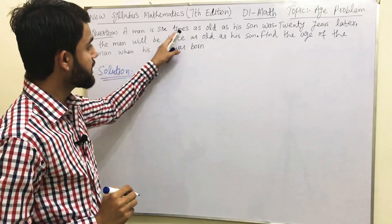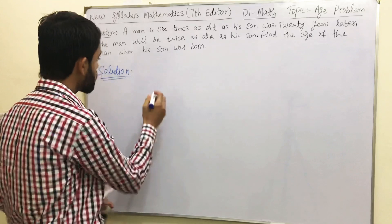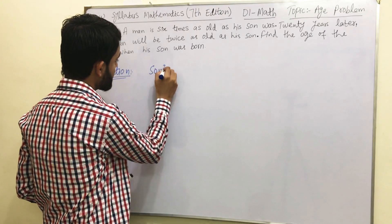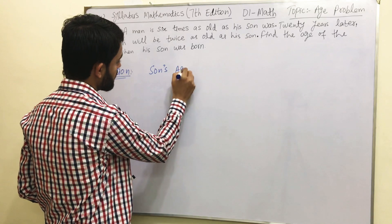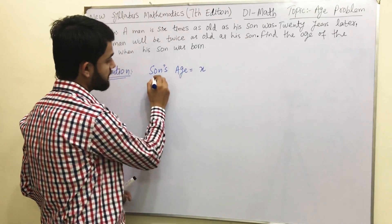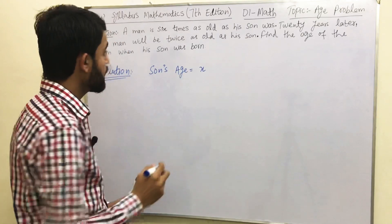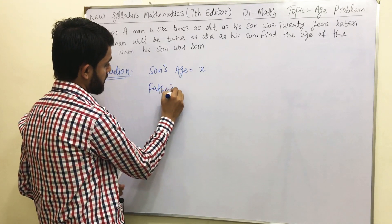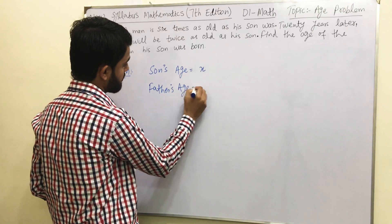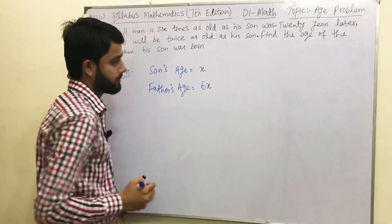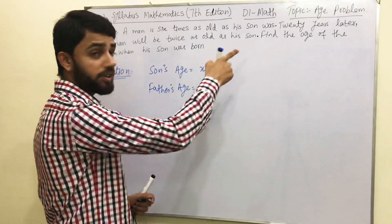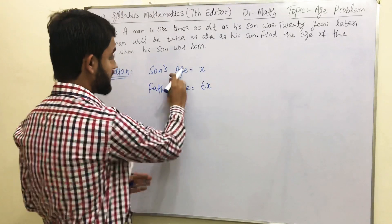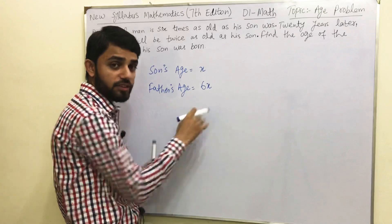The man is 6 times as old as his son. So what we are going to do is assume: let the age of the son be x. Therefore, the father's age is 6x. Now, 20 years later, both the son and the father are growing.